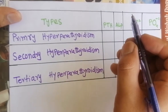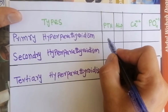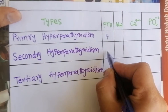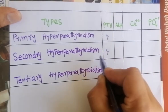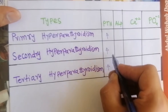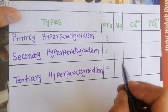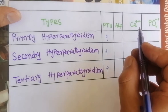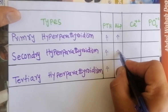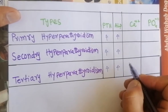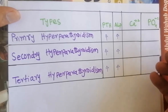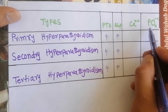First of all, PTH level is increased in all hyperparathyroidisms — that is primary hyperparathyroidism, secondary hyperparathyroidism, and tertiary hyperparathyroidism. In all hyperparathyroidisms, ALP level is also increased. So both ALP and PTH levels are increased in all types of hyperparathyroidism.